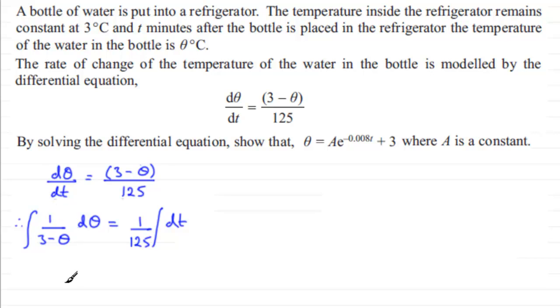And I see that this is minus the natural log of the mod of (3-θ). And then if we integrate 1 over 125 with respect to t here, we're just going to get t over 125, and then we mustn't forget the constant of integration.